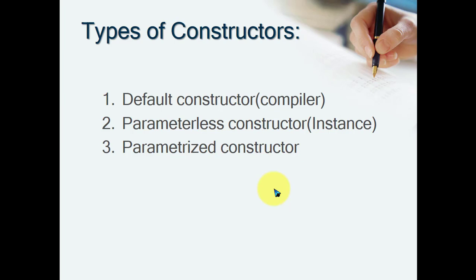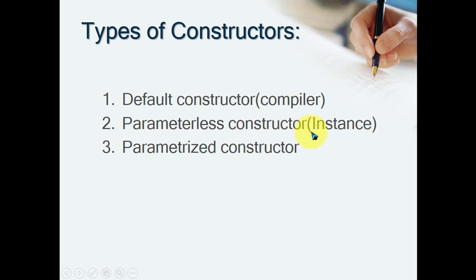The parameterless constructor is like this: it is a user-defined zero-argument constructor, but it is user-defined — it is not provided at the time of compilation, it is defined by the user. The default constructor is compiler-provided at the time of object creation.